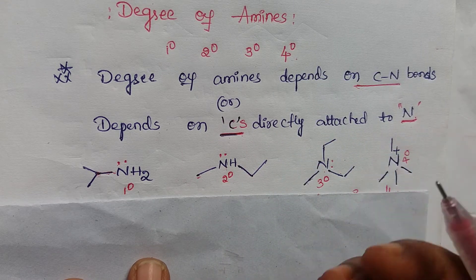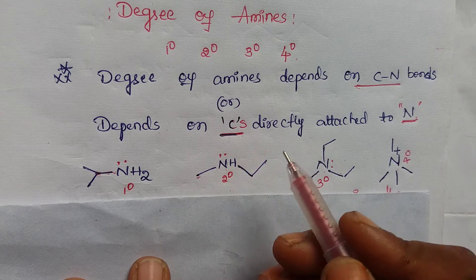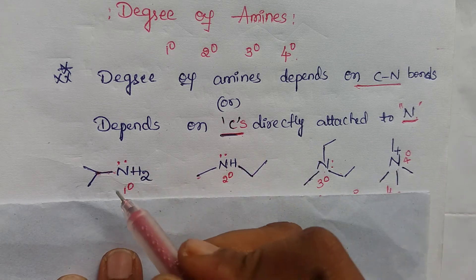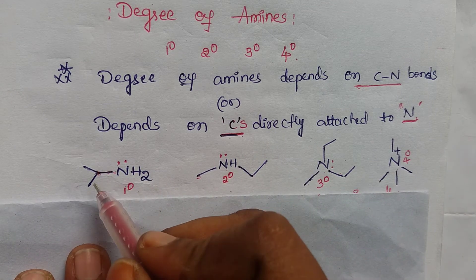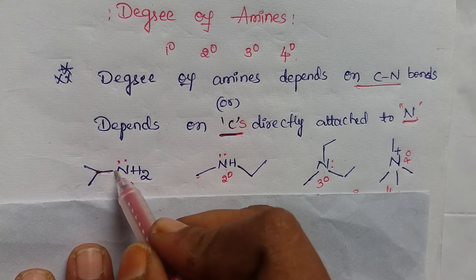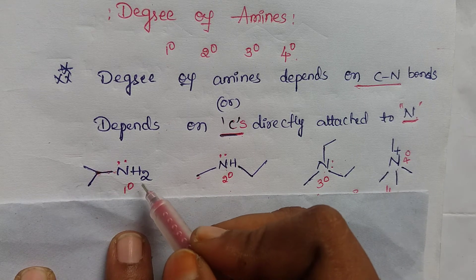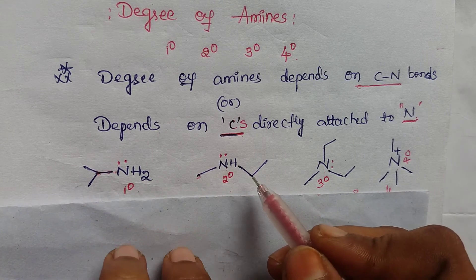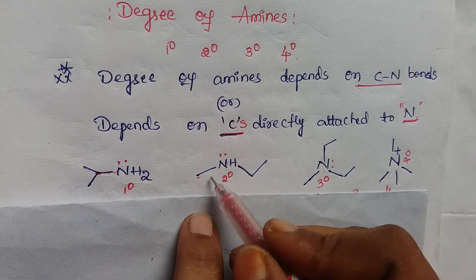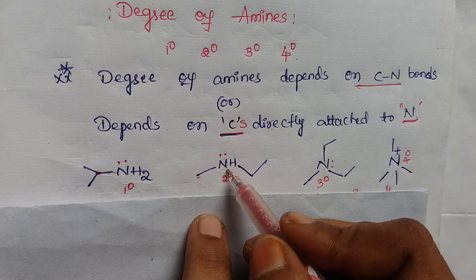That means, if one carbon is directly attached to the nitrogen, it is called a primary amine. Here, one carbon is directly attached to the nitrogen, so it is a primary amine. If two carbons are directly attached to the nitrogen, they are called secondary amines.